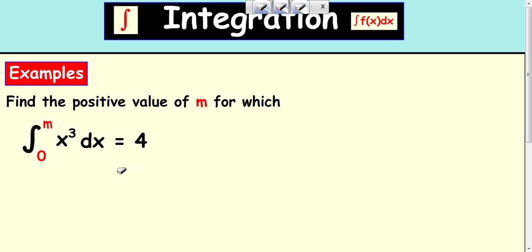To do this calculation, we just do the integration as normal. So we integrate x³, add one to the power and divide by that new power. So we get ¼x⁴.